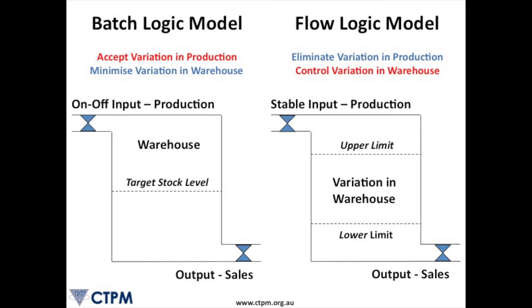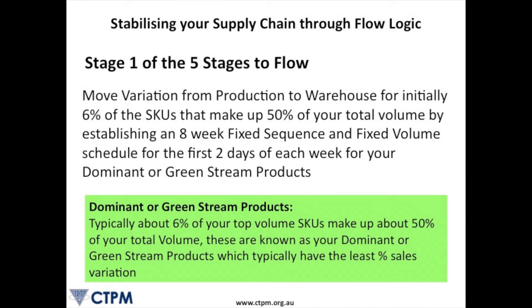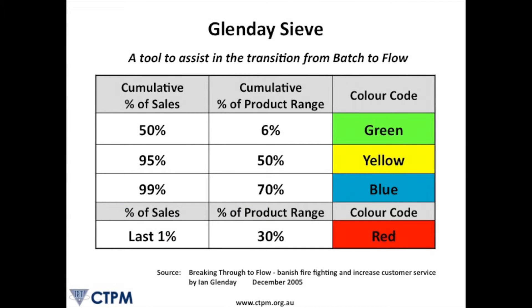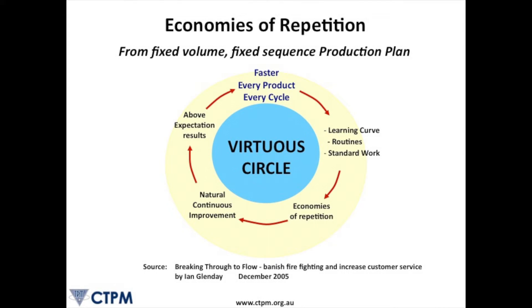Flow logic is different from traditional batch logic, so it requires a change of thinking regarding the production planning process. As such, this is best done by a cross-functional team to ensure buy-in of the key players. Flow logic is typically a five-stage process, with stage one aiming to achieve a stable production plan for about 50% of the volume of production — recognising that, according to the Glenday sieve, about 6% of your SKUs will typically make up 50% of the volume. This approach takes variation in demand out of the production area and moves it into the warehouse, as the 6% of SKUs typically have the lowest percentage variation in demand.